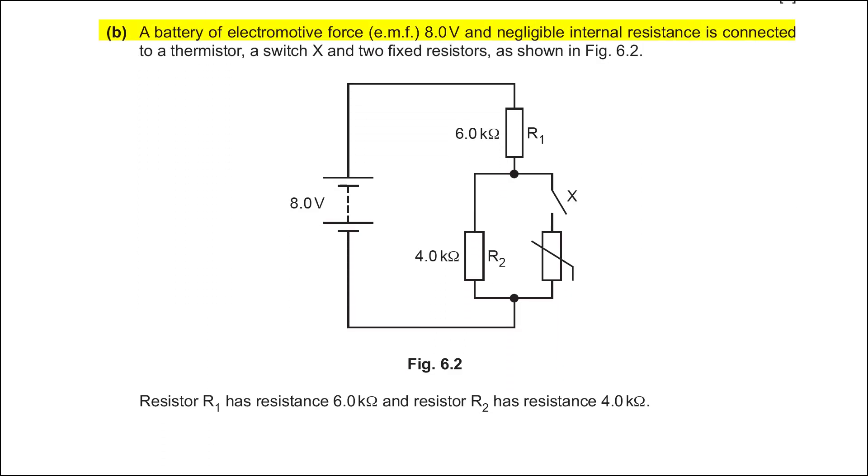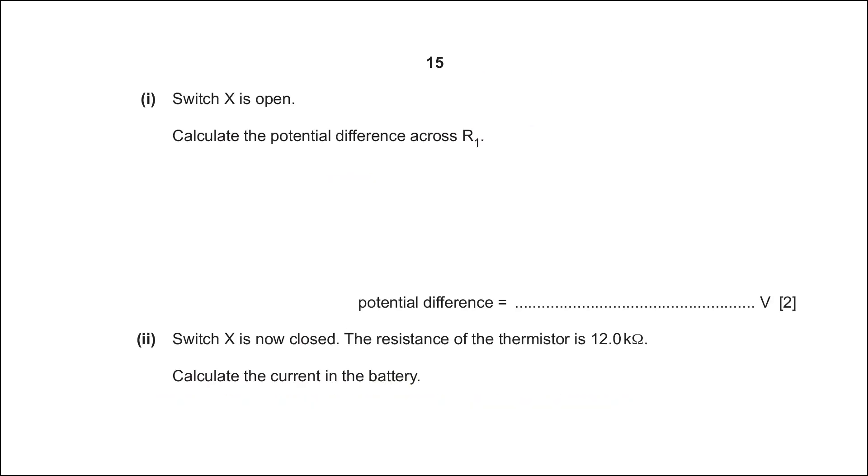Part B. A battery of electromotive force EMF 8 volts and negligible internal resistance is connected to a thermistor, a switch X and two fixed resistors as shown in figure 6.2. Resistor R1 has resistance 6 kOhms and resistor R2 has resistance 4 kOhms. Part 1: Calculate the potential difference across R1 when switch X is open.